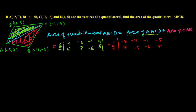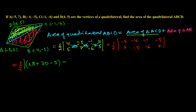For triangle ACD, we apply the shoelace method. Southeast products: 4×7 = 28, plus (-5)×(-6) = 30, plus (-1)×5 = -5. Then we subtract the southwest products: 5×5 = -25, (-1)×7 = -7, and 4×(-6) = -24. This completes the calculation for triangle ACD.